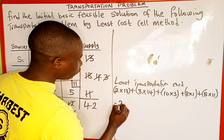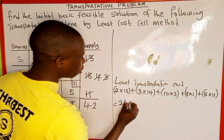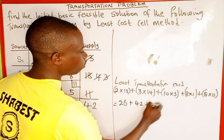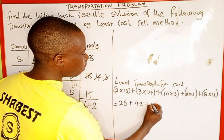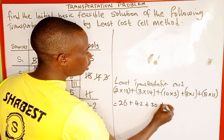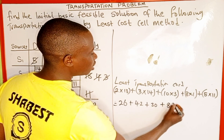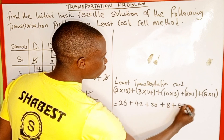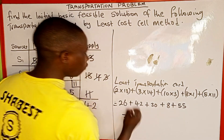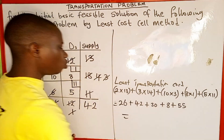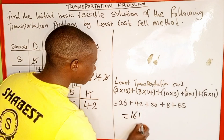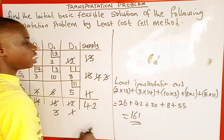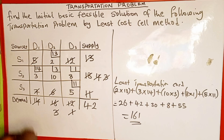Computing each term: 2×13 = 26, plus 3×14 = 42, plus 10×3 = 30, plus 8×1 = 8, plus 5×11 = 55. Summing everything together gives us 161. Therefore, 161 is the least transportation cost of this problem.